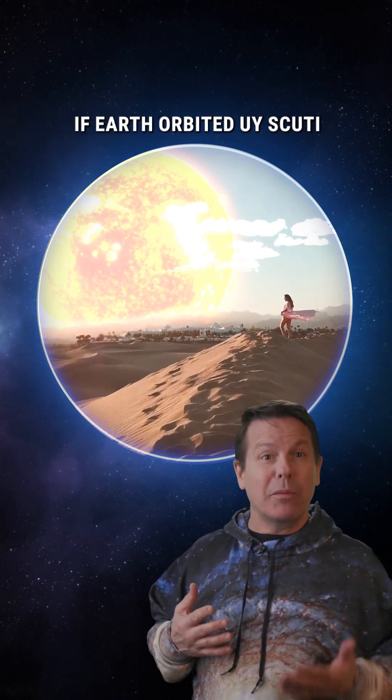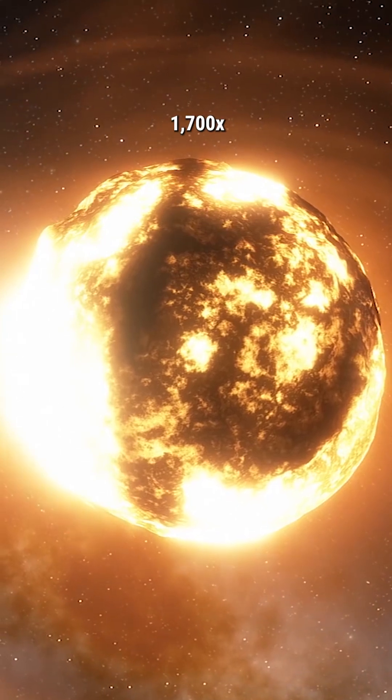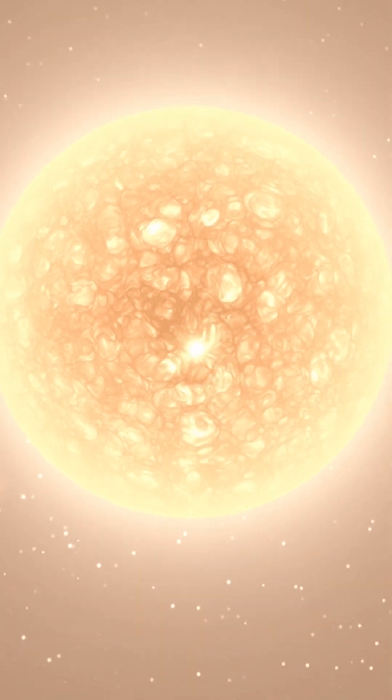Here's what would happen if Earth orbited UY Scuti. UY Scuti is 1,700 times larger than the Sun, and the largest star the human race has ever discovered.